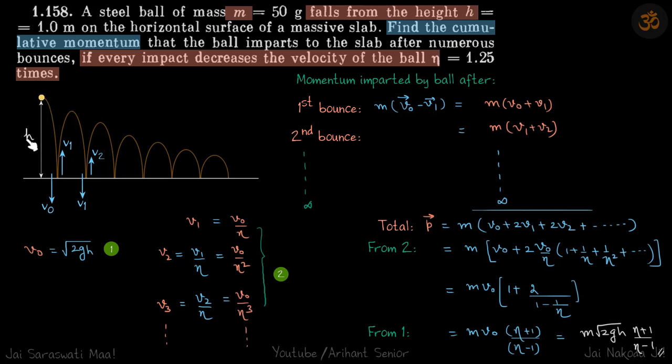A steel ball is dropped from height h and every time it bounces its velocity reduces by a factor of eta. We need to find the cumulative momentum that is given to the table.